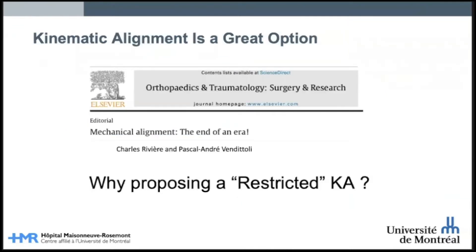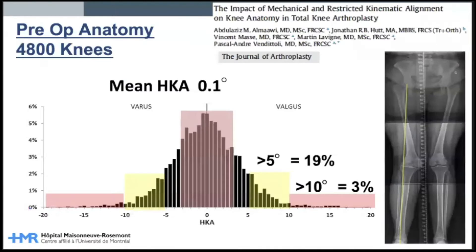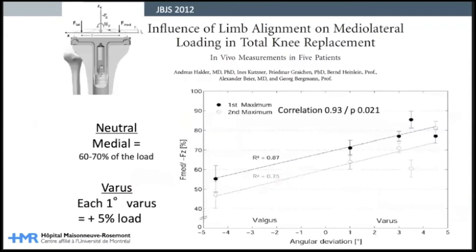Do I feel that KA is a great option? Certainly. So why am I proposing a restricted kinematic alignment option? Looking at the anatomy of 4800 patients scheduled for total knee arthroplasty, we observed that the mean HKA is very near neutral. However, the anatomy variation is very wide with 19% of the cases with HKA above 5 degrees and 3% with HKA above 10 degrees. From a study like one by Bergman, where they measured the intra-articular load in vivo, we learned that there is a direct correlation between lower limb alignment and intra-articular load.